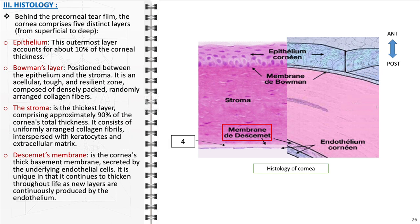Descemet's membrane, produced by endothelial cells, is a thickening basement membrane that provides durability and elasticity to the cornea. Its ability to continually thicken throughout life is a unique aspect of corneal anatomy and function.